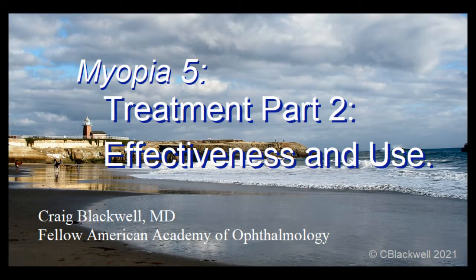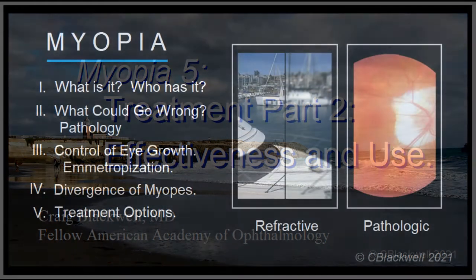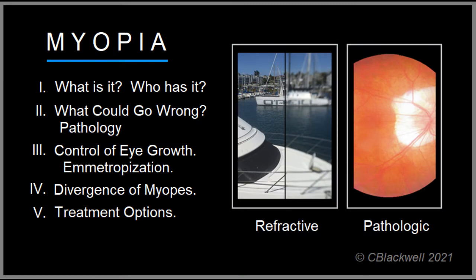This is video number five, part two in our series about myopia. In it we continue our exploration of treatment methods aimed at slowing progression of myopia, looking at their effectiveness and how they are used in practice around the world. In this series we have divided myopia into five subject videos covering what is myopia, what can go wrong, eye growth and how it diverges into myopia, and treatment methods.